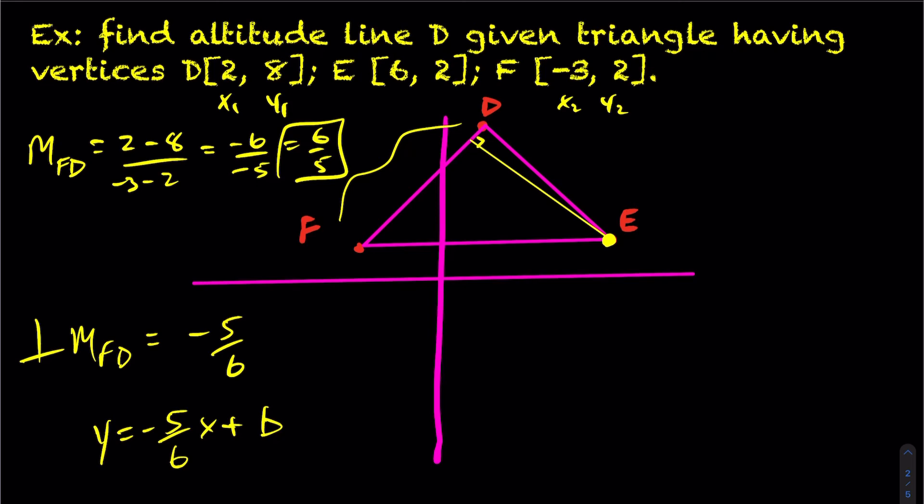So to find my y-intercept, I need a point. I don't know where this altitude line is crossing this line segment, but I have this point here, E. I know point E is 6 and 2. So I can sub that point into my equation and solve for b. In this case here, we get 2 equals negative 5 over 6 times 6 plus b. With cancellation, we get b equals 7.